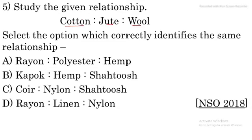Question number five: study the given relationship. Cotton, jute, and wool — cotton and jute are plant fibers, and wool is an animal fiber. These are all natural fibers.